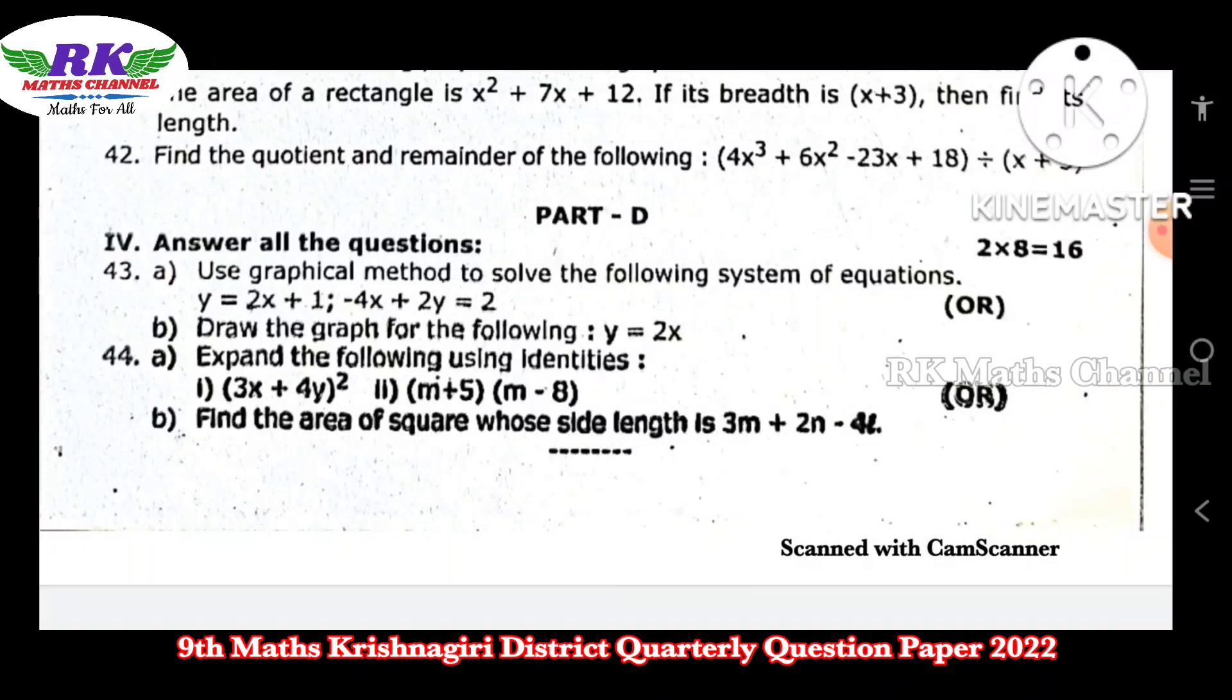Question number 44 covers algebra identities. Part A is expand using identities (5x + 4y)² and (m+5)(m - 8). Part B asks to find the area of a square whose side length is 3m + 2n - 4k. That is a whole square formula, using (a + b + c)² formula.